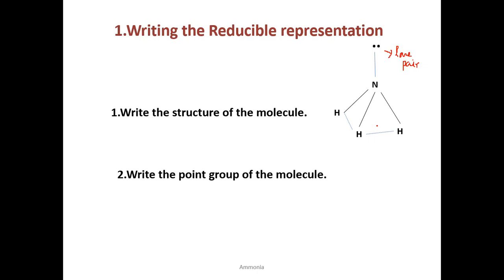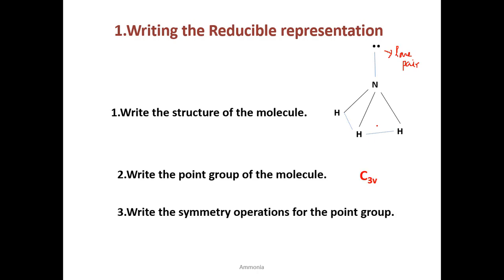Next we have to write the point group for this molecule. The point group is C3v. Next we have to write the symmetry operations for the C3v point group: E, C3, and sigma v.